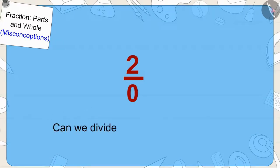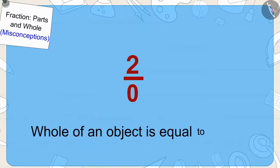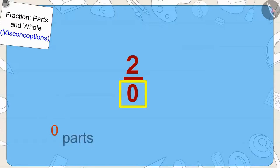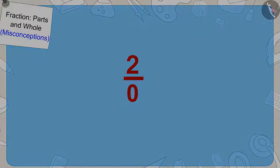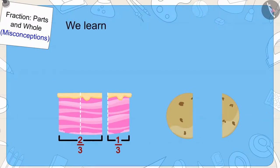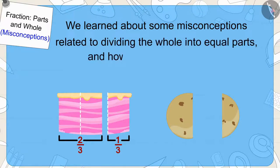Children, can we divide anything into zero parts? No — if there is an object, it will have at least one part. The whole of an object is equal to one part. Like, if we have this cake, we can write it as one upon one, meaning this whole cake is one part and we are taking that whole portion. Zero parts means there is no part, and when there is no part, how can we take two parts from it? Children, in this video we learned about some misconceptions related to dividing the whole into equal parts and how to write it in fractions.